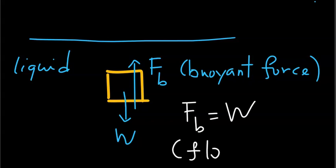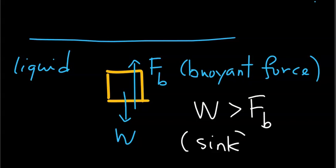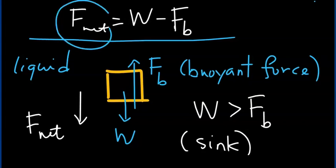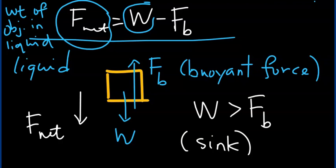If the buoyant force equals the weight of the object, the object will simply float, because the two forces balance each other out. If the weight of the object is greater than the buoyant force, the object will sink further, and there is a net downward force. This net force — the weight of the object minus the buoyant force — is sometimes known as the weight of the object in the liquid, which is less than the true weight W.